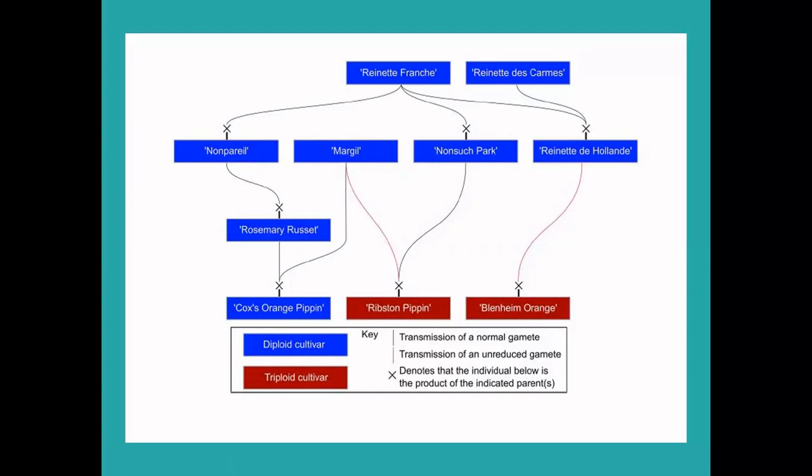Now onto the final primordial cultivar we'll cover, Cox Orange Pippin. It was initially thought that Cox Orange Pippin was a hybrid between Ribston Pippin and Blenheim Orange. The genetic evidence shows that this is not the case.